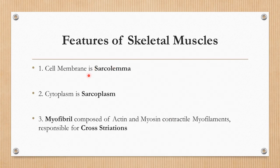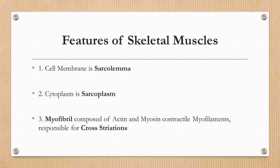The skeletal muscles also have certain important features. The cell membrane is known as sarcolemma and the cytoplasm is known as sarcoplasm. The sarcoplasm is composed of myofibrils, which are actually the actin and myosin contractile myofilaments, and these are responsible for the cross striations in skeletal muscles.